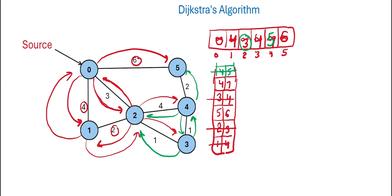We now have two nodes left in the priority queue: node 4 with distance 7 and node 5 with distance 6. We pick node 5. From node 5, we can move to 0 or 4. Moving to 0 gives distance 12, more than current, so we ignore it. Moving to 4 gives distance 8, more than current, so we ignore this too. Next, we pick node 4 with distance 7, but we already processed node 4, so we ignore this entry.